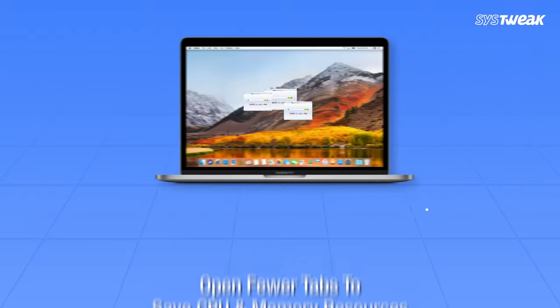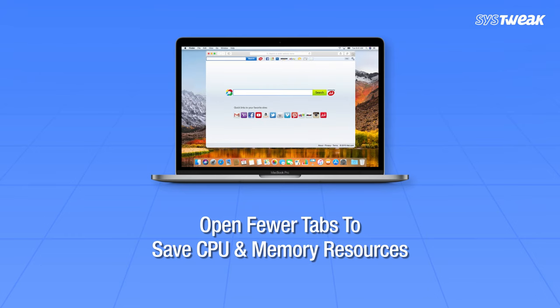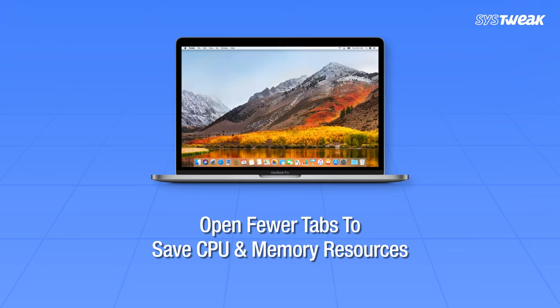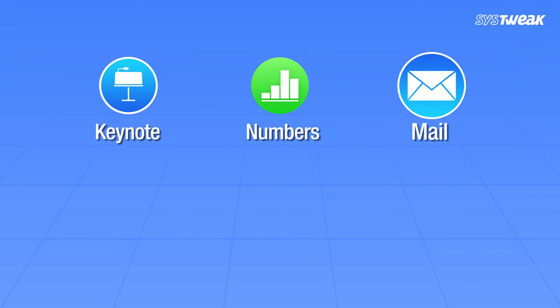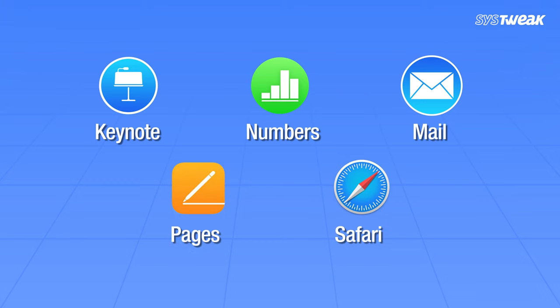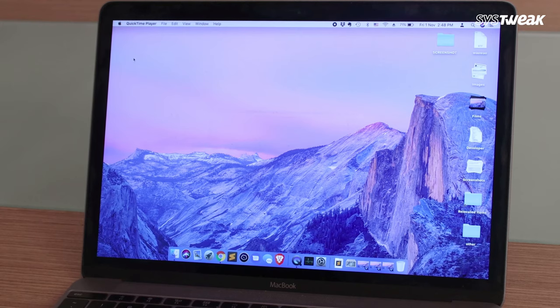To speed up your slow Mac, try to reduce the number of browser extensions and open fewer tabs at once to save CPU and memory resources. Moreover, try to use native browser apps like Safari, as it is also good for your battery power.